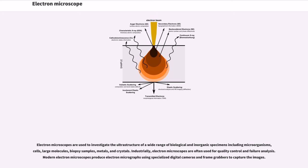Industrially, electron microscopes are often used for quality control and failure analysis. Modern electron microscopes produce electron micrographs using specialized digital cameras and frame grabbers to capture the images.